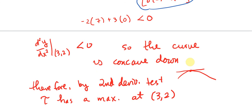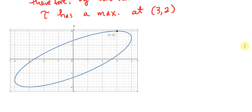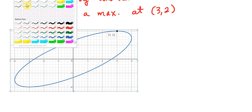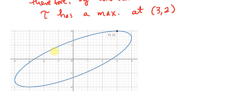Let me show you what the graph of this curve looks like, just for your understanding and edification. When graphed, it looks like a slanted elliptical orbit, almost like a planet orbiting the sun. You can see that at the point (3, 2) the tangent line is horizontal and the curve is concave down, confirming it's a maximum. As always, ask for help if you need it — thank you for watching and have a wonderful day.